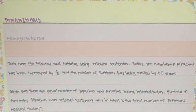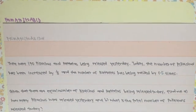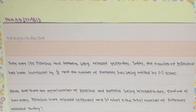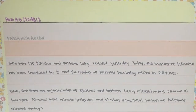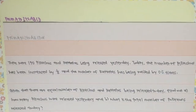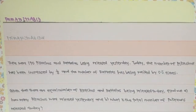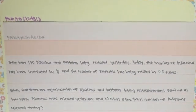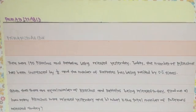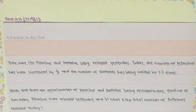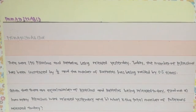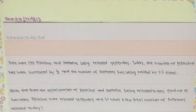There are 170 Pikachus and Rattatas being released yesterday. Today, the number of Pikachus has been increased by one third and the number of Rattatas has been raised by 0.5 times. Given that there are an increased equal number of Pikachus and Rattatas being released today, find out A: How many Pikachus were being released yesterday? And B: What is the total number of Pokemons released today?